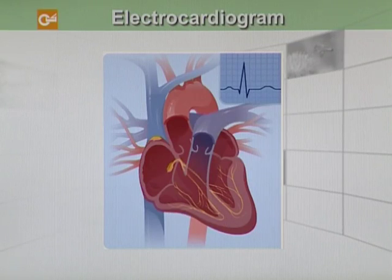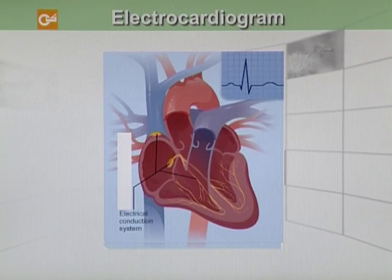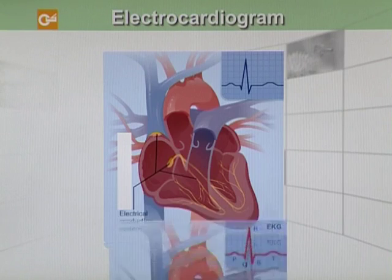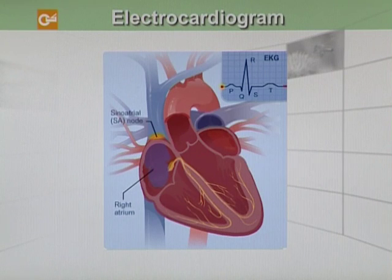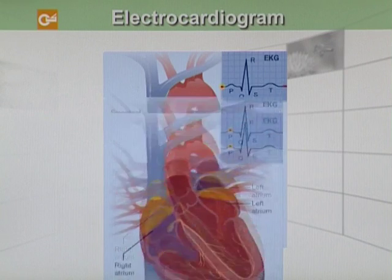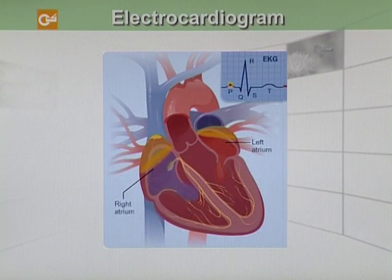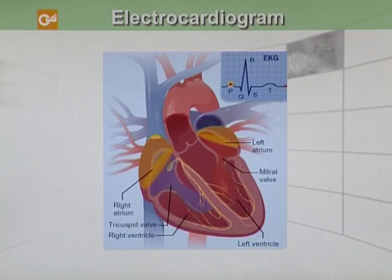We can see the heart and the electrical signals being generated in it through the electrical conduction system. The electrocardiogram shows the activity of the heart's electrical conduction. When your heart's right atrium is filled with blood, the electrical signals spread across the cells of your heart's right and left atria. This signal causes the atria to contract or squeeze, pumping blood through the open walls from the atria into both ventricles. The P wave on the ECG marks the contraction of your heart's atria.